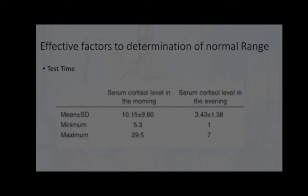Test time. Some internal factors have a daily cycle. Therefore, it's very important to do it at an exact time, and normal range is defined for these times. For example, cortisol should be examined at 8 a.m. or 4 p.m.